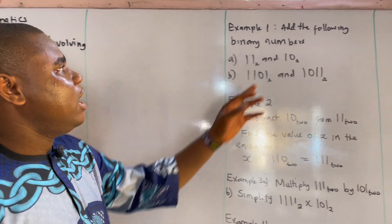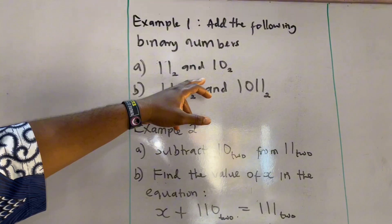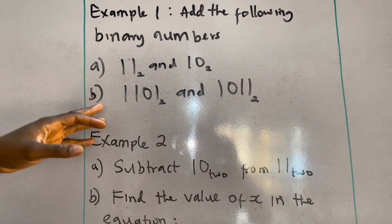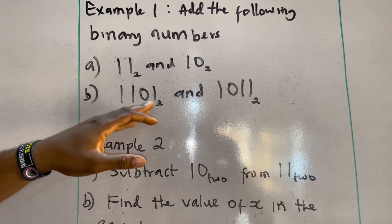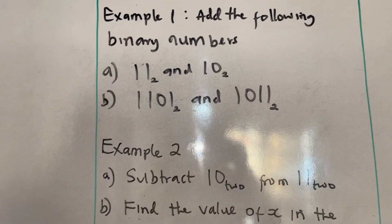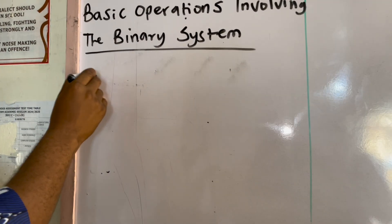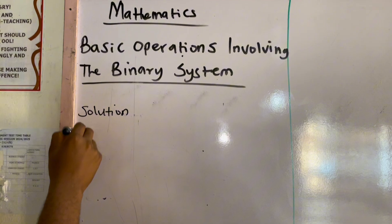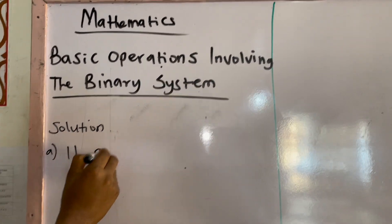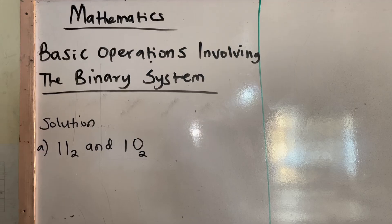Example one: add the following binary numbers — 11 base 2 and 10 base 2. For part B, we have 1101 base 2 and 1011 base 2. For the solution, we have 11 base 2 and 10 base 2.